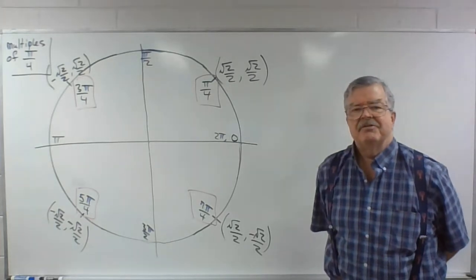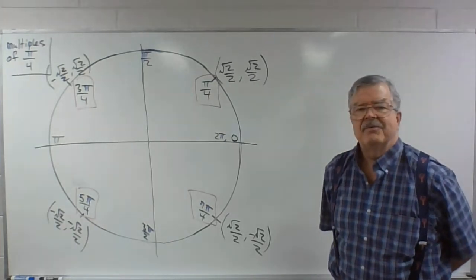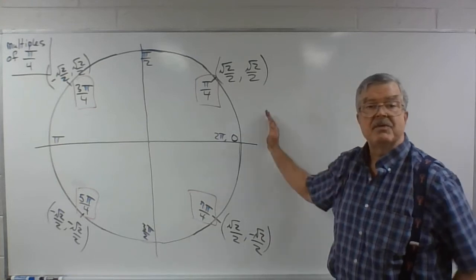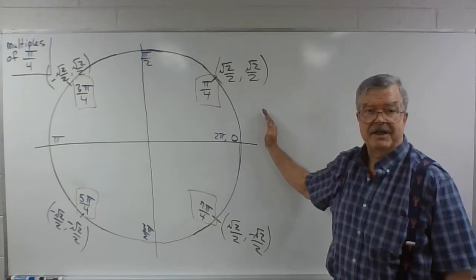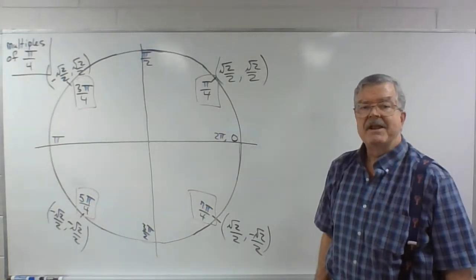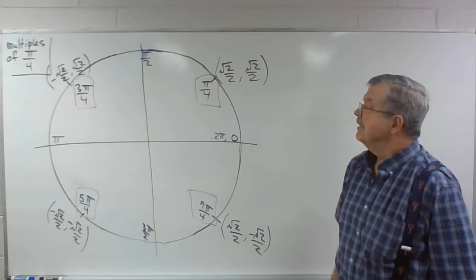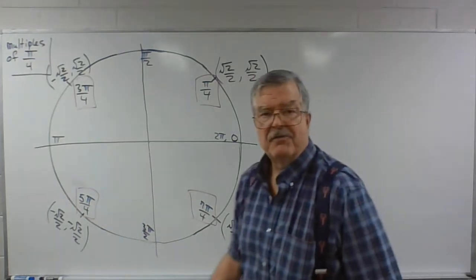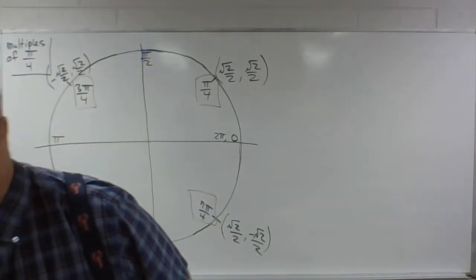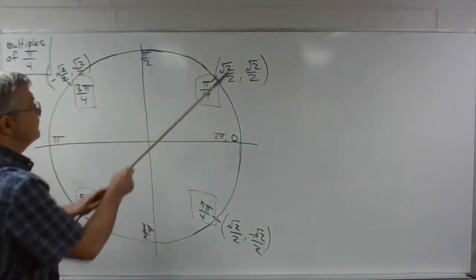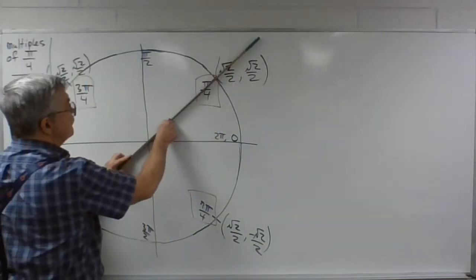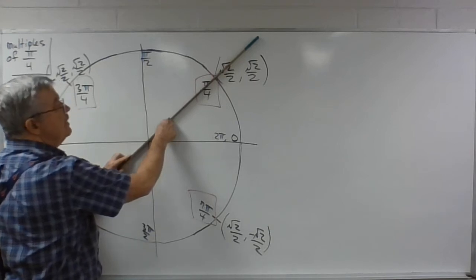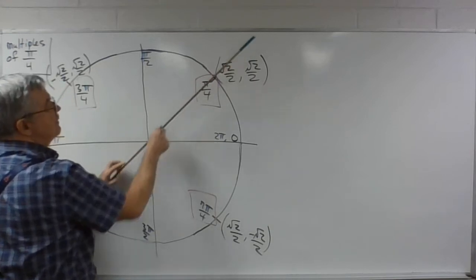It looks like I had the recording turned off when it should have been on and vice versa, so let me repeat what I just did. I noted that pi over 4 is 45 degrees. So in the first quadrant, an angle of pi over 4 cuts the first quadrant in half — two 45-degree angles.